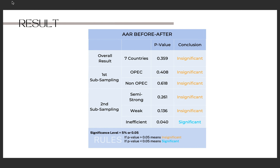The result of average abnormal return before and after shows significance in 7 countries, and most subsamples show the same result. This might happen because there was news circulating before the announcement that Russia had officially invaded Ukraine. From this widespread issue, it is assumed that investors predicted the invasion, so when the official announcement came, the information was no longer considered new, and thus did not generate significant abnormal returns. However, the inefficient form shows a significant difference in average abnormal return before and after the event, which might have occurred because of a high level of asymmetric information.